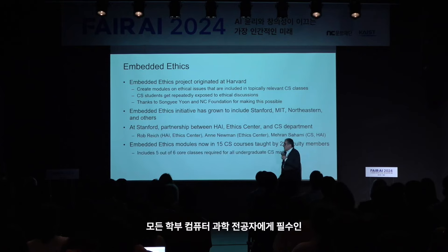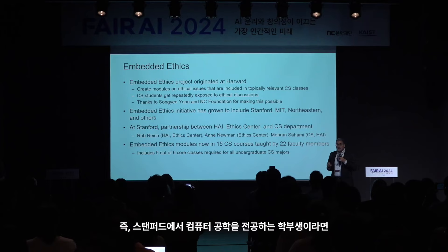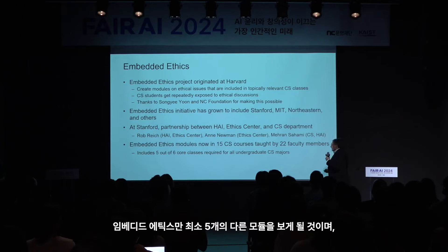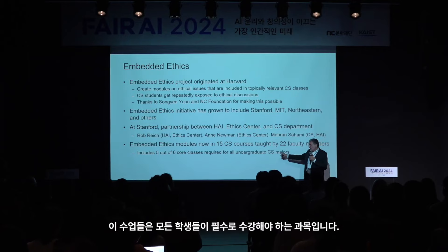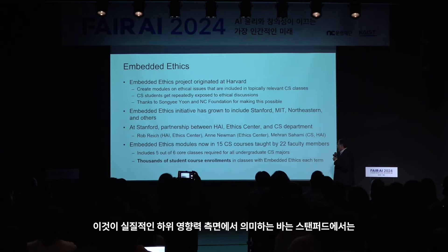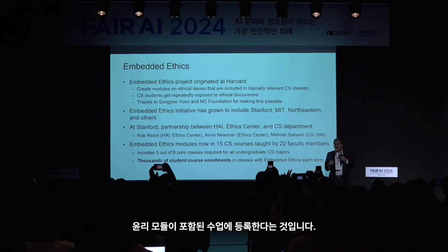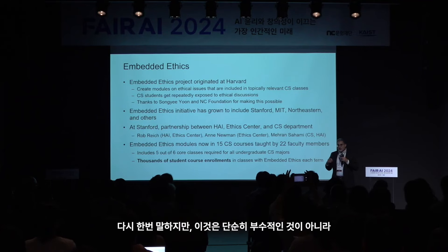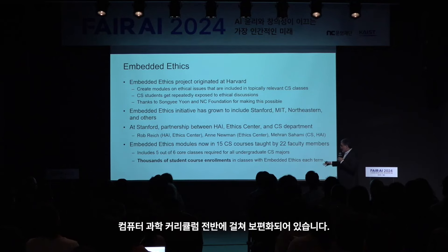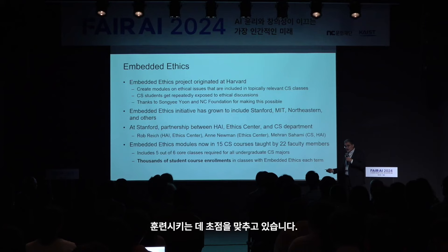Five of the six core courses required for all undergraduate CS majors already include embedded ethics modules. That means every undergraduate CS major at Stanford is guaranteed to see at least five different embedded ethics modules—and most will see many more. In practical terms, every term at Stanford, thousands of students are enrolled in courses with embedded ethics modules. It is ubiquitous across the CS curriculum, training students to think about ethical considerations as part of their education.